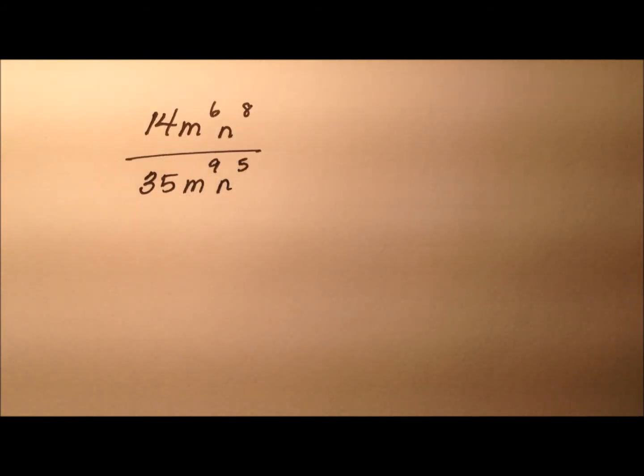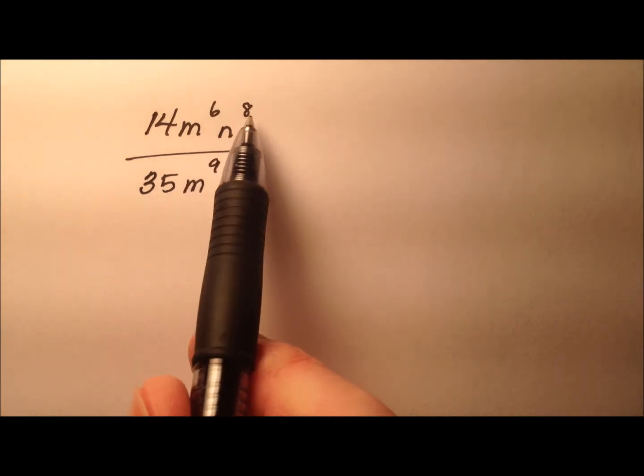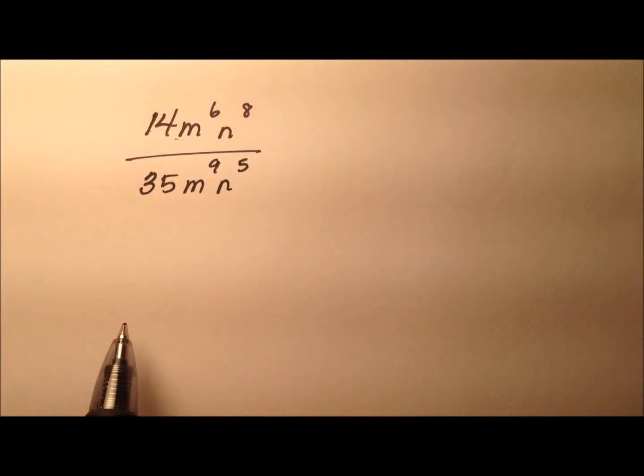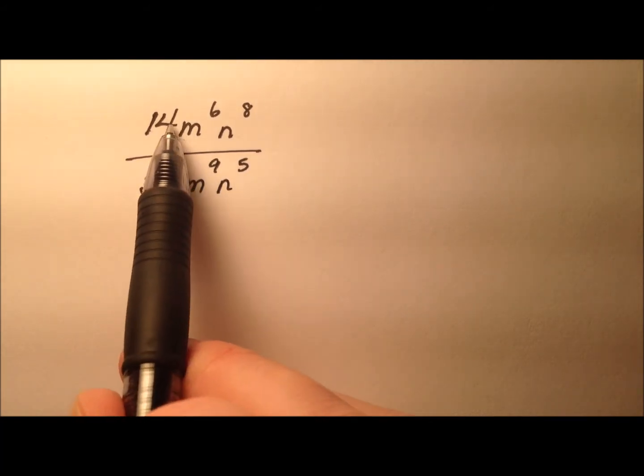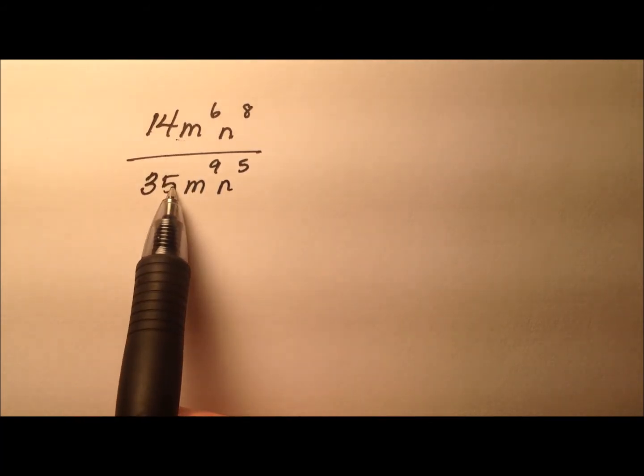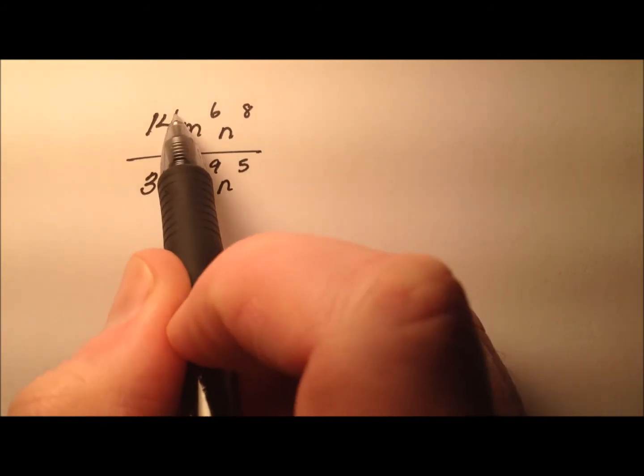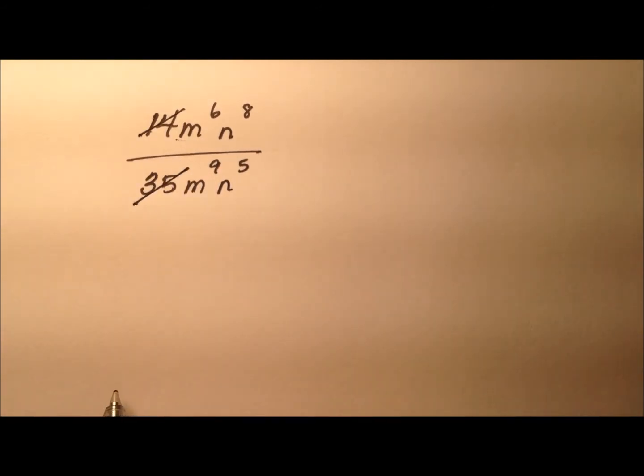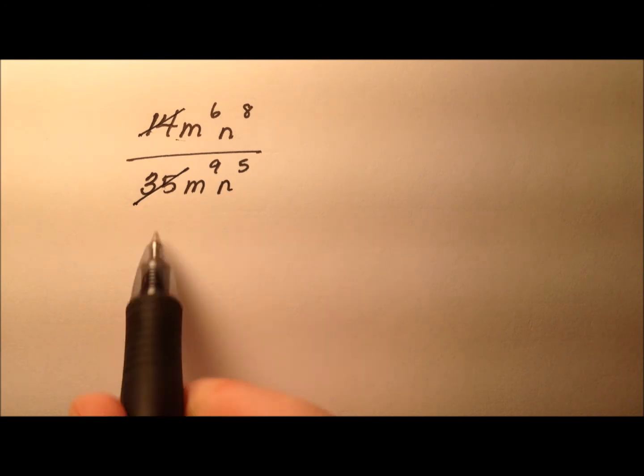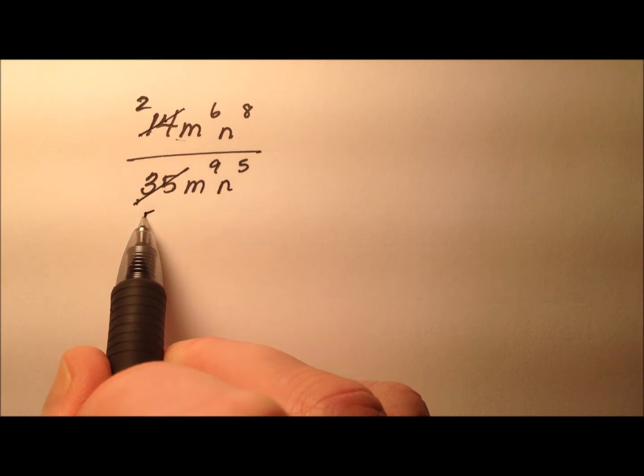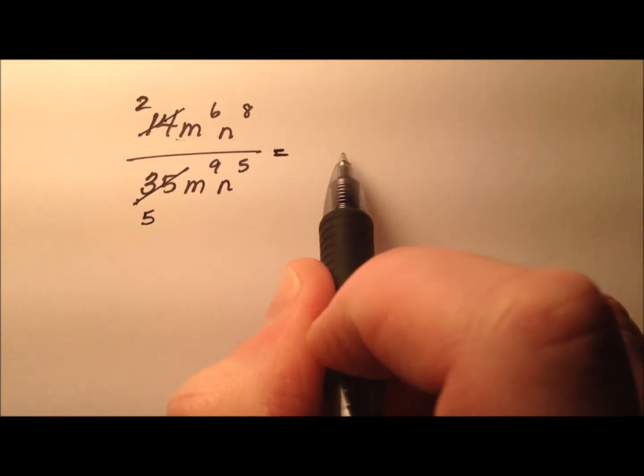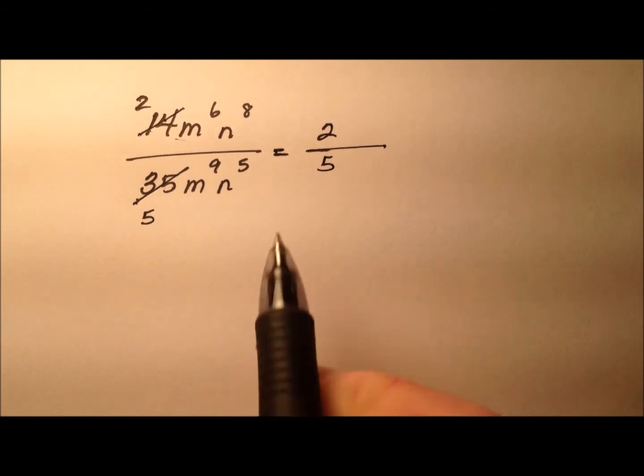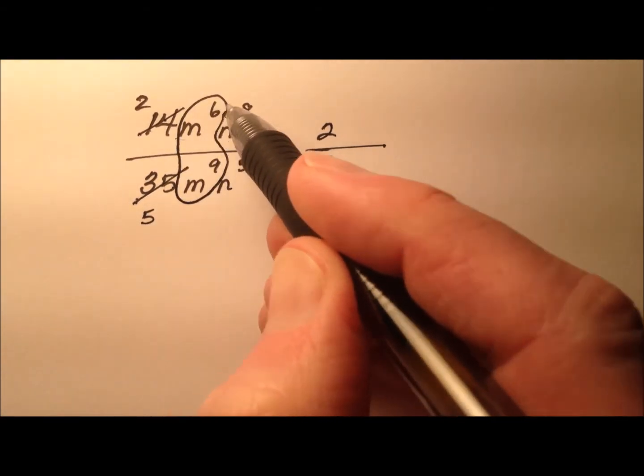In this second example, I want to show you when you divide two monomials, you're not always guaranteed to get a monomial for the quotient. We have 14 and 35 for our coefficients. When I divide these, I can factor and cancel a 7 from both of them. So 14 divided by 7 will become 2, and 35 divided by 7 will become 5. So I have 2 over 5.